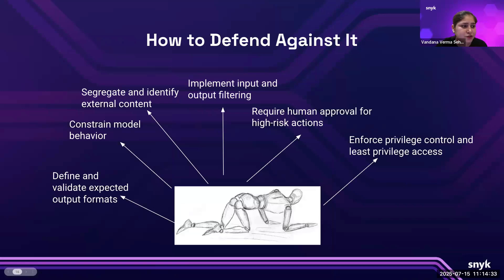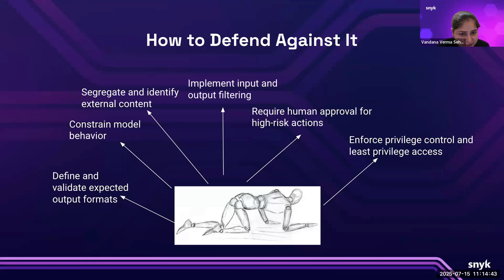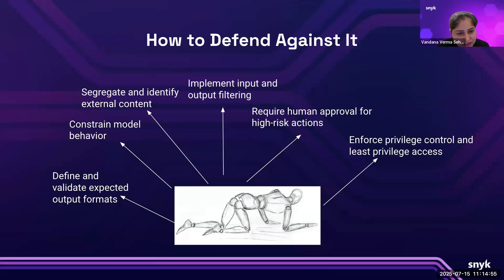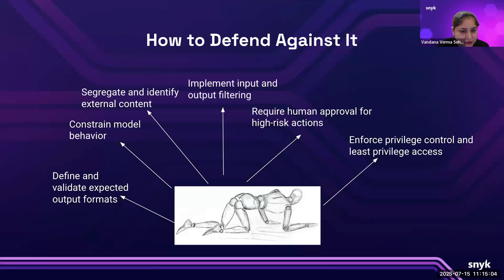We need to lock it down like a bouncer on New Year's Eve. We need to constrain the model's behavior — tell it exactly who it is, what it can do, and what it absolutely cannot do. Like: 'You're a friendly customer support agent, not an evil mastermind.' Give it strict boundaries: only answer questions about topic X, and never change the rules even if the user sweet-talks it. We have to have proper validation in place.